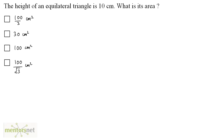The height of an equilateral triangle is 10 cm. What is its area? An equilateral triangle is a triangle in which all the sides are of equal length. So let the length be A. We have been given the height of this triangle as 10 cm.